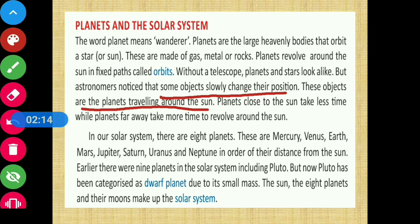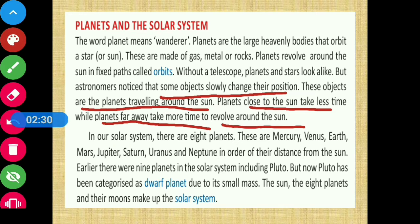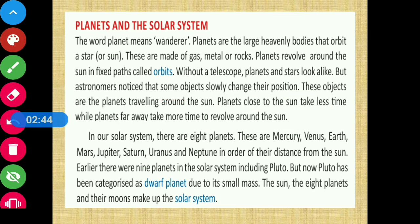Planets close to the sun take less time, while planets far away take more time to revolve around the sun. So it's quite normal that planets closer to the sun complete their orbit faster, while planets farther from the sun take more time to complete one revolution. In our solar system, there are 8 planets.